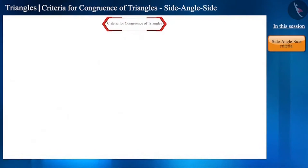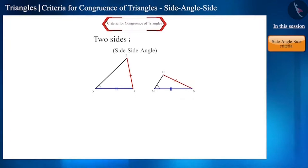Apart from SAS, are two triangles congruent by the SSA rule? Wherein two sides and one angle of a triangle which is not within these sides are equal to the sides and one angle of another triangle.